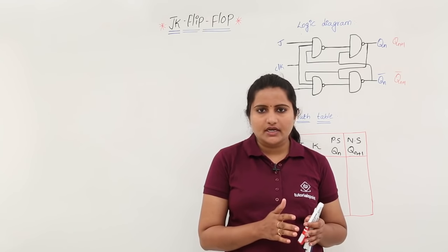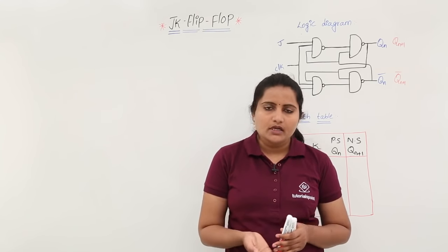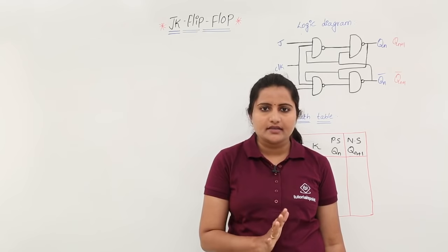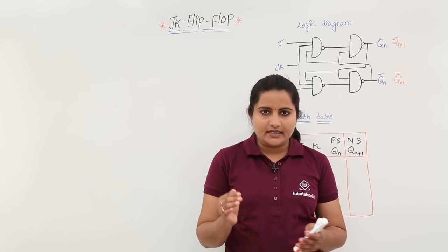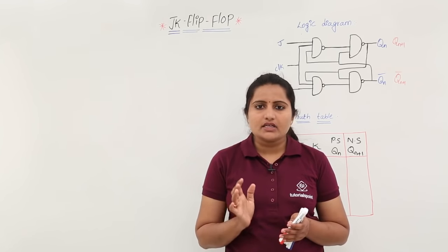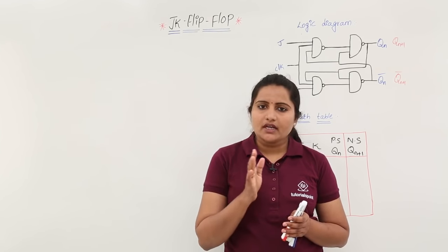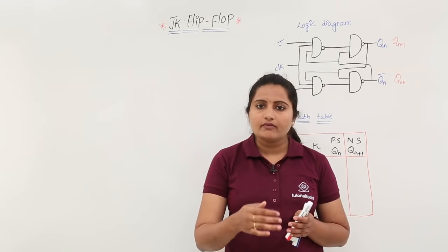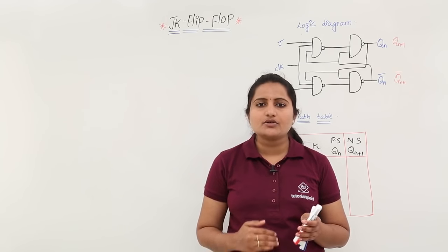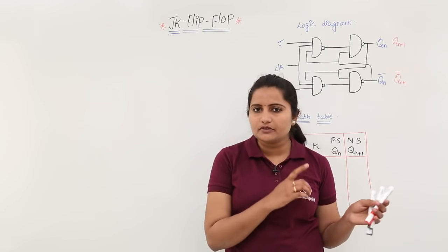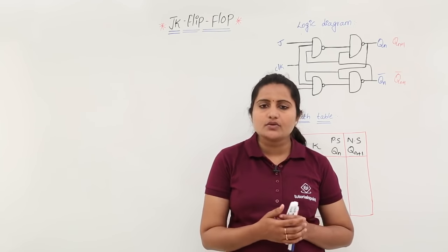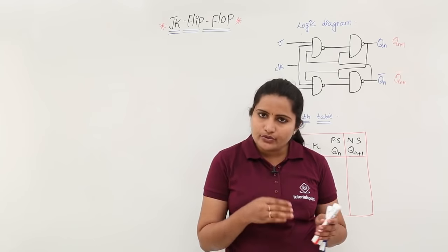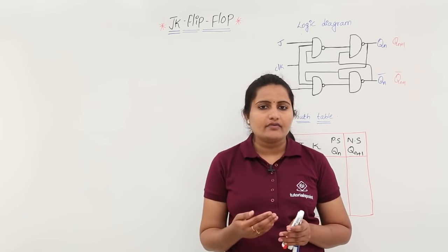If we do not want that indeterminate state, that can be a problem. For example, if you do not want the indeterminate state and just want only set and reset, for that we design the D flip-flop. In D flip-flop only set and reset conditions are possible. In SR flip-flop, one condition — when S=1, R=1 — one time cycle is going to waste.